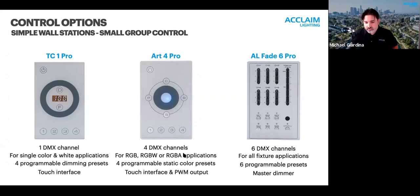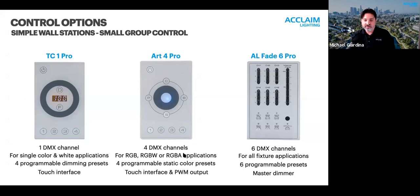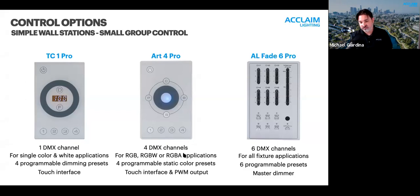Finishing up the small group controllers — and to note, these are very affordable. We have the AL Fade 6 Pro, which features six DMX channels and is available for all fixture applications, whether single color, color changing, or dynamic white, because it's just individual DMX faders. There's no requirement that this is one channel or four channels — you've got six faders usable for whatever you need.